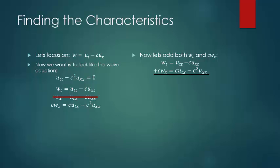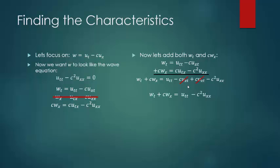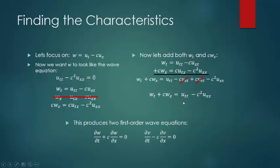Let's go ahead and add w_t and c·w_x together. When we do that, we get this equation, but as you can notice those two middle terms will cancel out — just like in our factoring. Now we have the original 2D wave equation equal to this one-dimensional wave equation, but in terms of w instead of u. We can do the same process for v, and we get: v_t minus c·v_x equals zero. And we found w_t plus c·w_x equals zero. Now we have our two first-order wave equations derived from the second-order wave equation, and we'll use these to create characteristic equations.